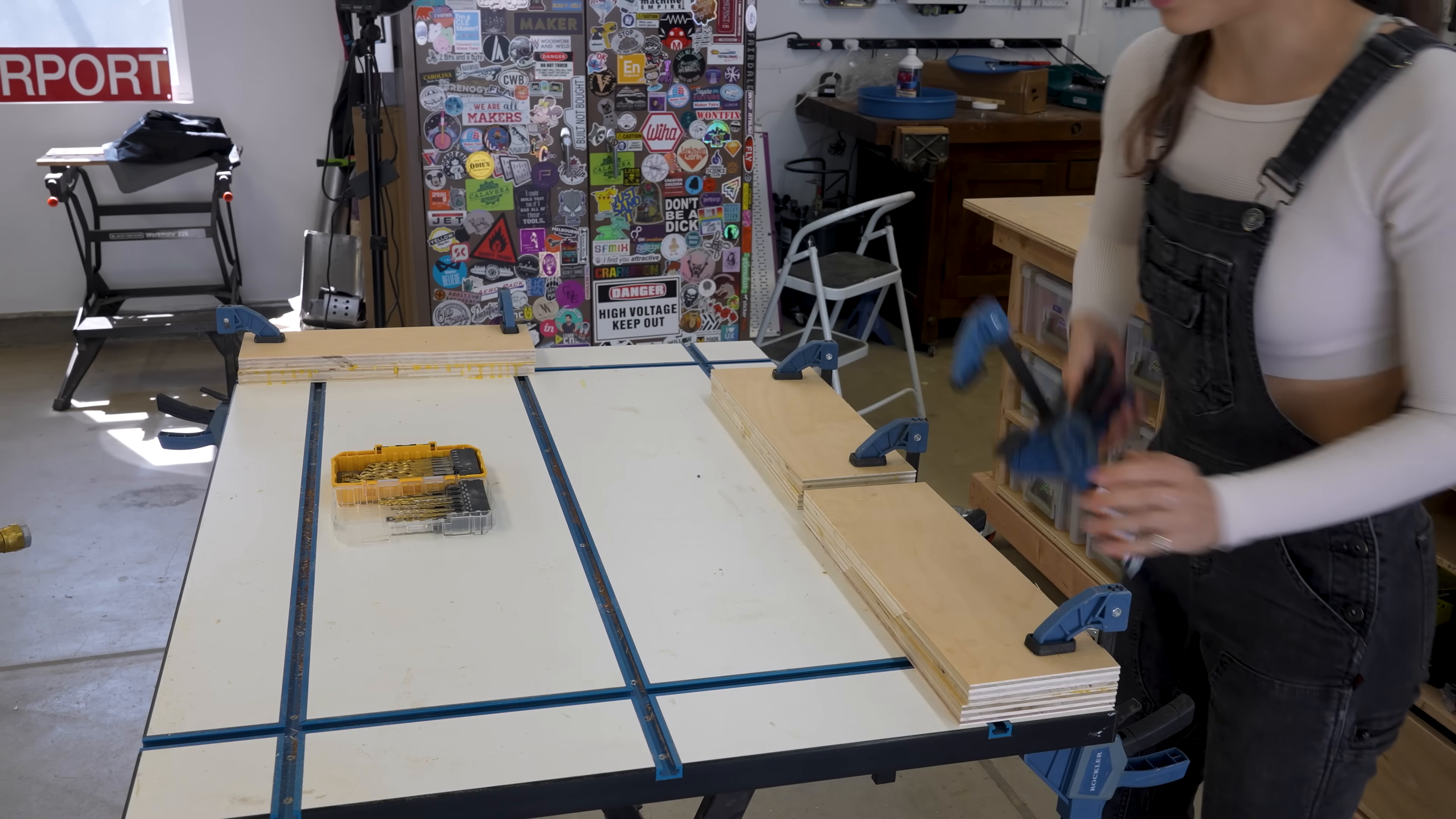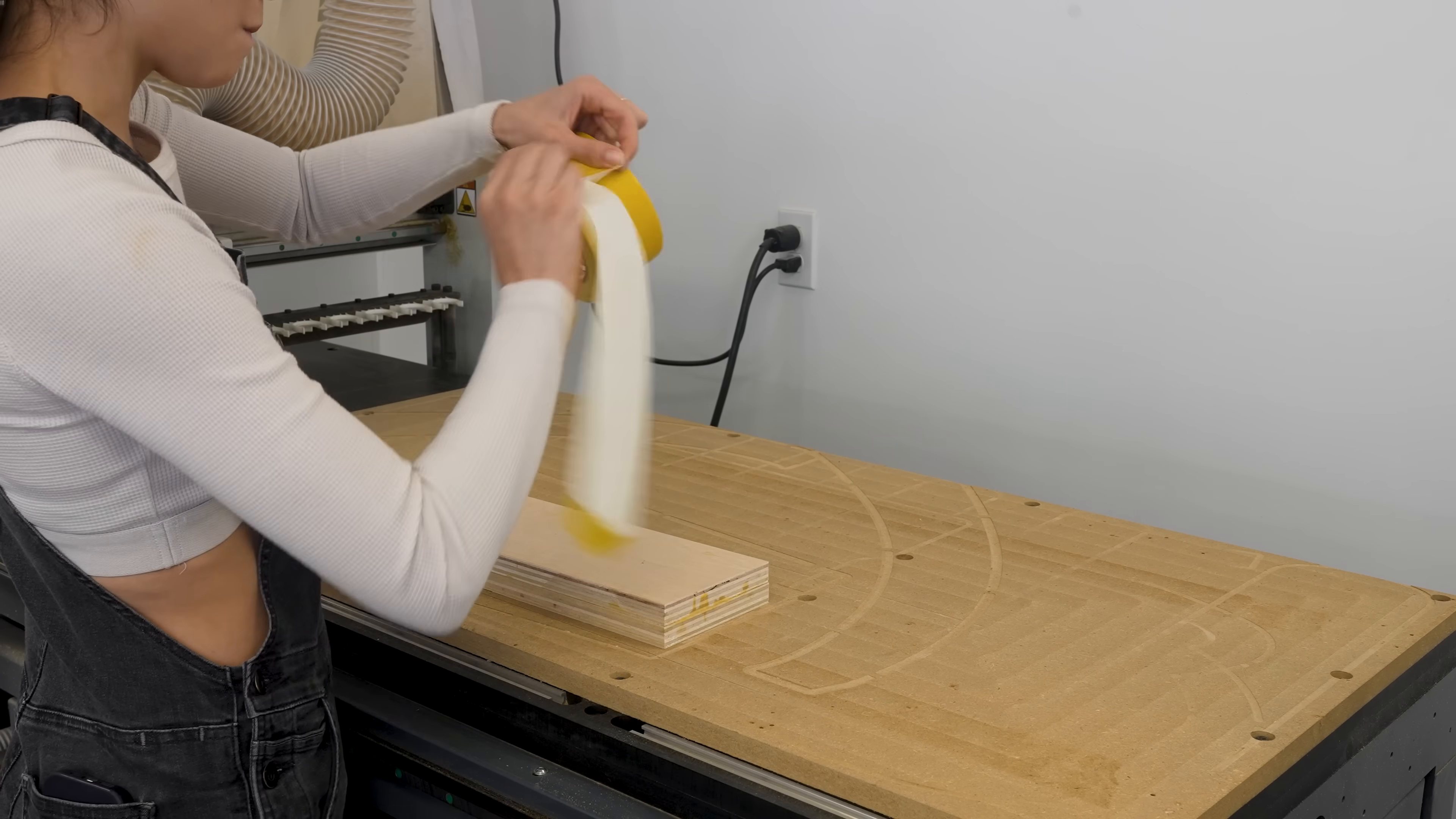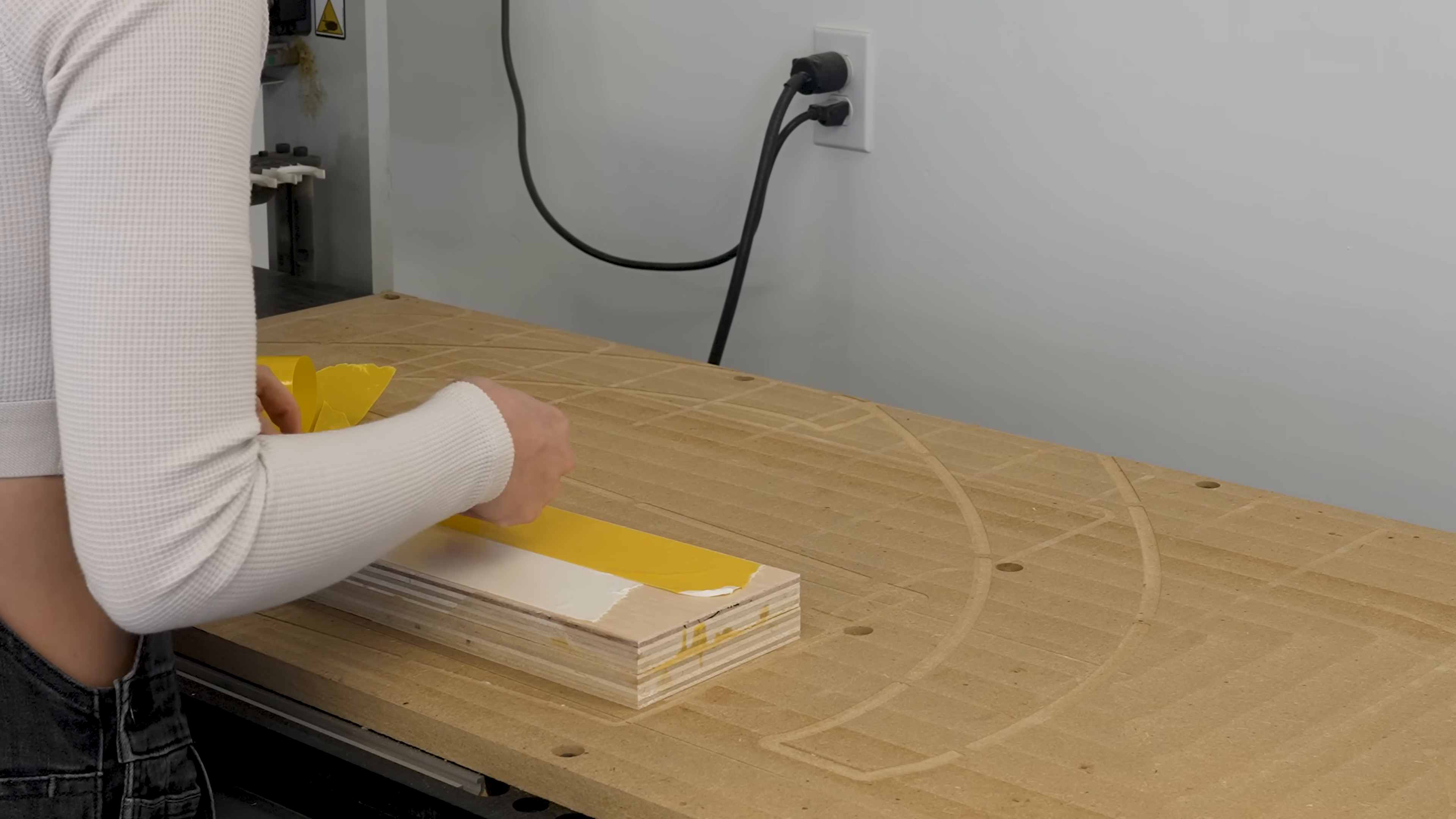So before I start cutting actual wood, I glued up these plywood scrap blanks that are roughly the same size as the stock I'm gonna be using. I just want to make sure that the machine is doing what I want it to be doing.